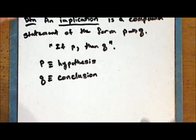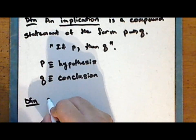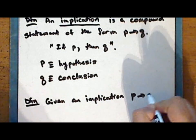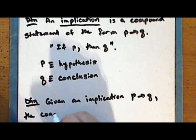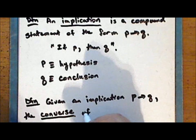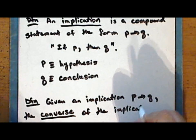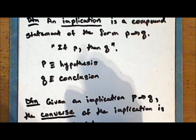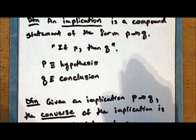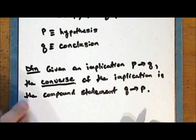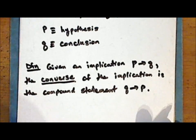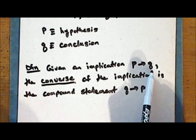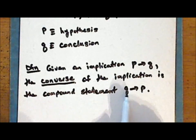Given an implication P implies Q, we can form related statements. The converse of the implication is the compound statement Q implies P. Notice that in the converse, we have a reversal of roles: what was the hypothesis in the implication is now the conclusion in the converse, and what was the conclusion in the implication is now the hypothesis of the converse.